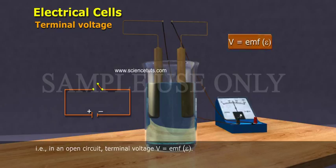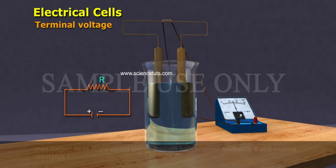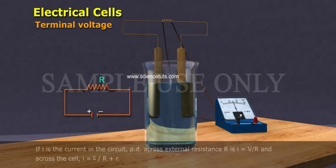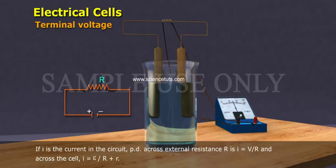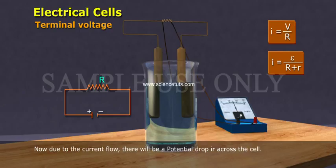Now if an external resistance R is connected across the two terminals of a cell, then current flows in the closed circuit through both external resistance R and internal resistance small r. If I is the current in the circuit, potential difference across external resistance capital R is I equals V by R, and across the cell I equals epsilon by capital R plus small r.